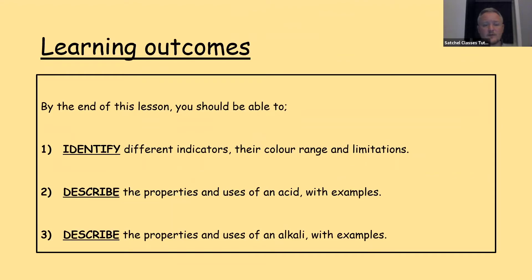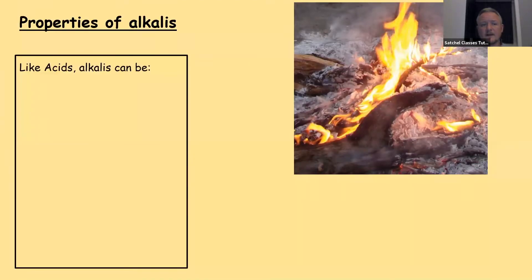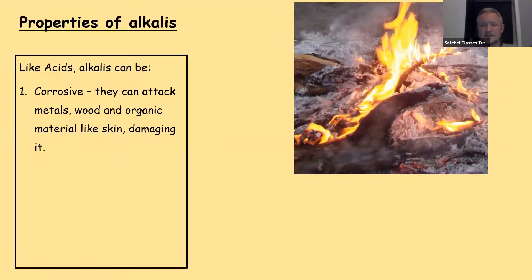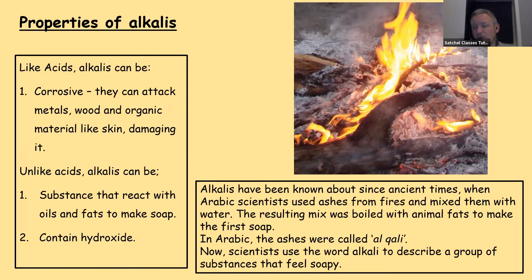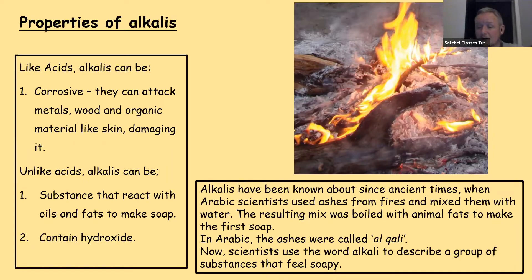That's our second outcome. Our third outcome: describe the properties and uses of an alkali with examples. Properties of alkalis: like acids, alkalis can be corrosive — they can attack metals, wood, and organic material like skin. But unlike acids, alkalis can react with oils and fats to make soap, and they contain a hydroxide ion rather than hydrogen. Alkalis have been known since ancient times, when Arabic scientists used ashes from fires mixed with water, and the resulting mix was boiled with animal fats to make the first soap. In Arabic, these ashes were called 'alkali' — the origin of the word scientists use today.